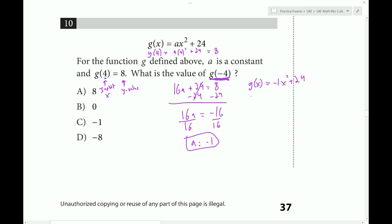Now, if we want to find G of negative 4, all we have to do is plug in negative 4 for our X value. Right? And negative 4 squared is 16. 16 times negative 1 is minus 16 plus 24. And 24 minus 16 is 8. So we end up with 8, which is actually the same as what we had here.